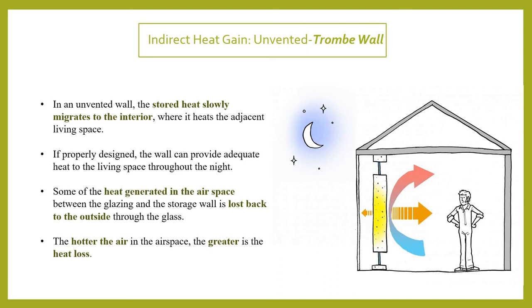In an unvented Trombe wall, the stored heat slowly migrates to the interior where it heats the adjacent living space. You have a glass wall, an air gap, and then the black brick wall. Heat falls on the glass surface, heats the air between the glass and the brick, and this hot air passes heat from the brick wall to the interior spaces. If properly designed, it can provide heat throughout the night as well.